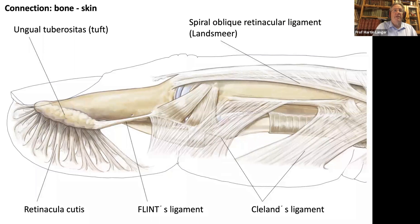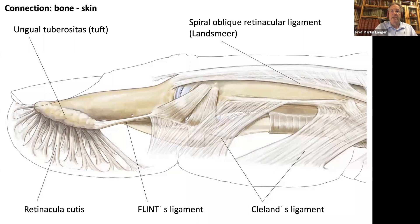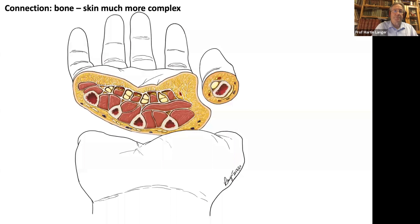In the finger, we have the connections at the tip of the fingers — from bone to skin — by the retinacular cutis. The fingertip is very important for sensibility and for mechanical resistance to great force. You can also see here the Flint ligament, the Cleland ligament, and the spiral oblique retinacular ligament. There are so many structures that are very important to the functions of the finger.